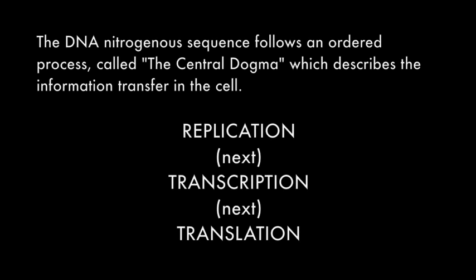The DNA nitrogenous sequence follows an ordered process called the central dogma, which describes the information transfer in the cell. It begins with replication, moves to transcription, and ends with translation.